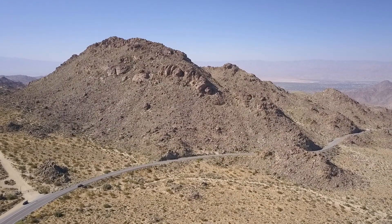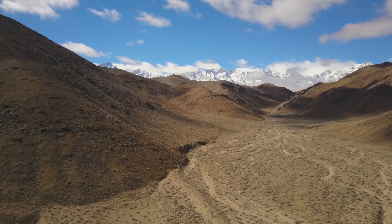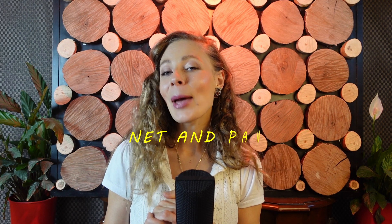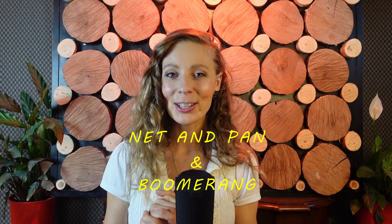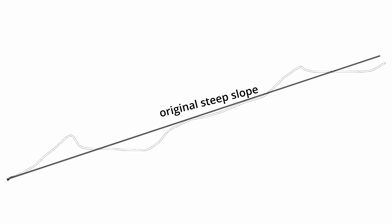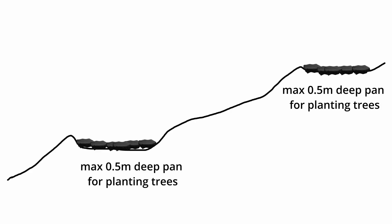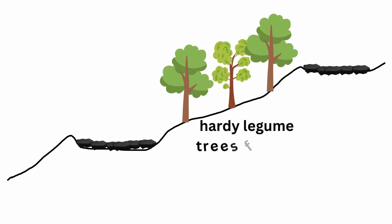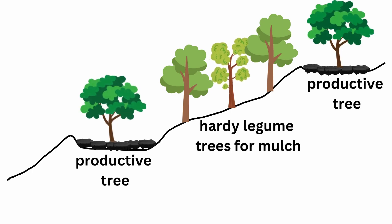On steeper slopes where it's not easy to create level ditches, diversion banks, or swales, a net and pan system and boomerang-style catchments for trees can be used. In the net and pan system, a pan is a basin dug every few meters to catch sheet runoff and store water in the ground. The pans are connected with each other with runoffs cut at a gentle slope of 1 to 500. If there are rocks on the side, the slope is cleared of them to be used as mulch for pans, creating better runoff results. A pan can be up to half a meter deep.